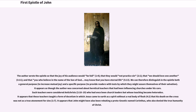It appears as though the author was concerned about heretical teachers that had been influencing churches under his care. Such teachers were considered antichrists (2:18–19), who had once been church leaders but whose teaching became heterodox. It appears that these teachers taught a form of docetism in which Jesus came to earth as a spirit without a real body of flesh (4:2), and that his death on the cross was not a true atonement for sins (1:7). It appears that John might have also been rebuking a proto-Gnostic named Cerinthus, who also denied the true humanity of Christ.